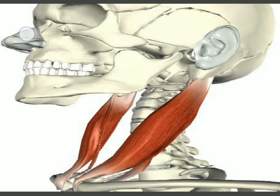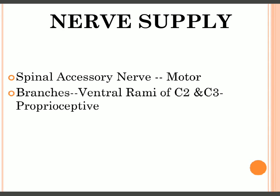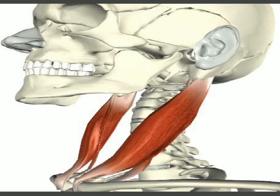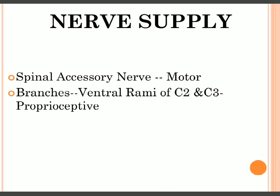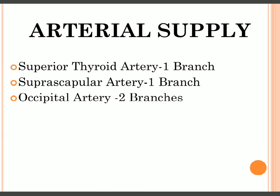The nerve supply: the motor nerve supply is provided by the spinal accessory nerve. It also receives branches from the ventral rami of C2 and C3, which are responsible for proprioception. The arteries supplying this muscle are the superior thyroid artery, suprascapular artery, and the occipital artery.